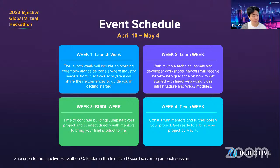Week two is learn week, with multiple technical panels from top developers and ecosystem developer workshops. Hackers will receive step-by-step guidance on how to get started with Injective's world-class financial infrastructure. Week three is build week — time to continue building, jumpstart your project, and connect directly with mentors to bring your final product to life. Week four is demo week, where you consult with mentors and polish your project. Make sure to submit by May 4th.